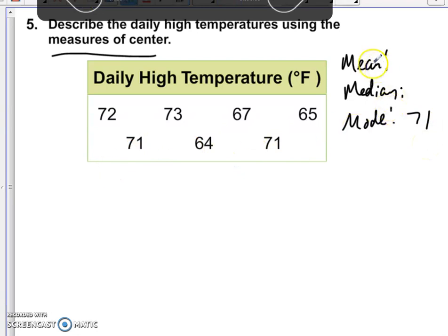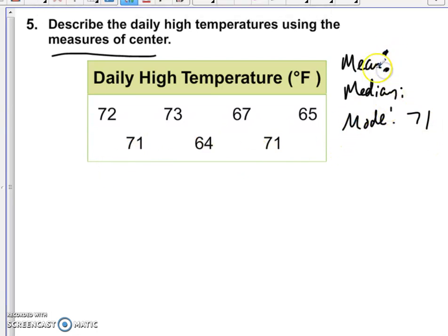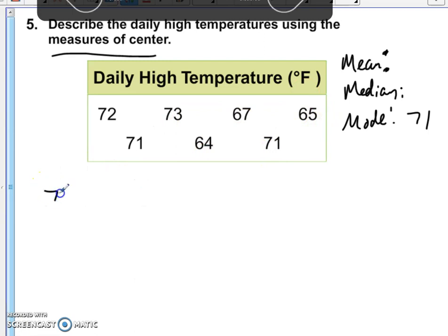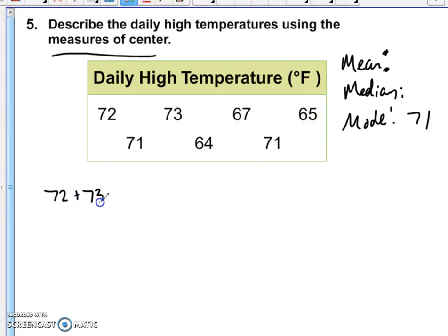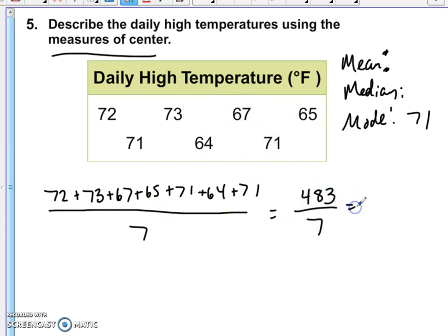To find the mean, let's do the average again. That's a review from yesterday's lesson. So we're going to add up all of our values. For the mean, we're going to add 72 plus 73 plus 67 plus 65 plus 71 plus 64 plus 71. And we divide the entire thing by 7. When we add the top out, you should get 483. And then after you divide it by 7, our answer is 69. So the mean is 69.